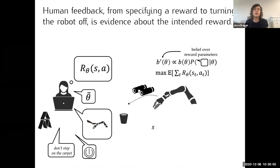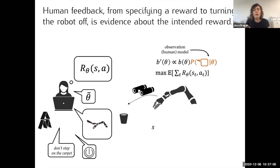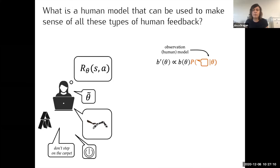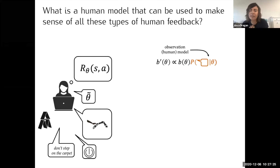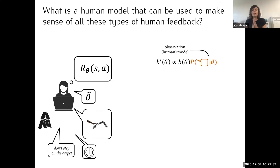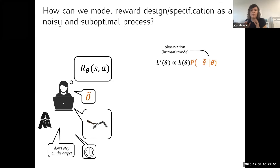How do we enable robots to extract the information people are leaking? How do we get them to stop over-relying on specified rewards? In other words, how do we go from observing feedback to an actual belief update on theta? To do this, we need a human model or observation model: given the reward function, what behavior from the human do you expect? We need a model that works for all these feedback types — the house of cards included. We have uncertainty about the reward function, and we use human feedback from various sources to learn about the reward.